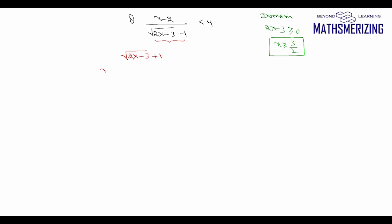So when I multiply numerator and denominator, I'll get (x - 2) · (√(2x - 3) + 1), and here when I multiply it, I'll get 2x - 3 - 1, so 2(x - 2) is less than 4.